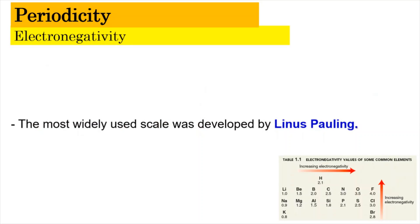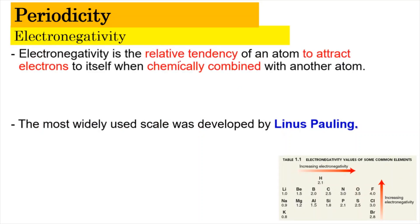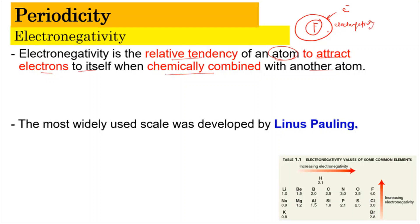So electronegativity. Electronegativity is basically a relative tendency of an atom to attract electrons to itself when chemically combined with another atom. Generally, fluorine will have a really high tendency in order to attract electrons. Electrons from another atom can be pulled very strongly by the fluorine atom, and this is the measure of electronegativity — the tendency for it to become a negative charge, which is F minus.